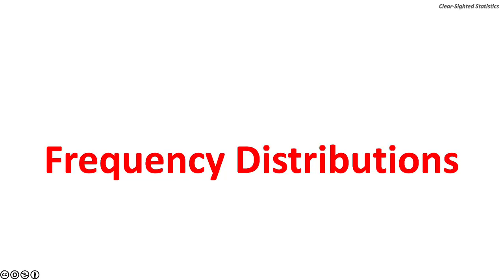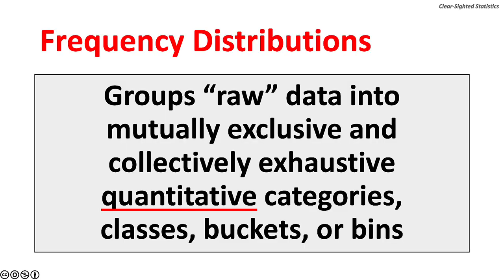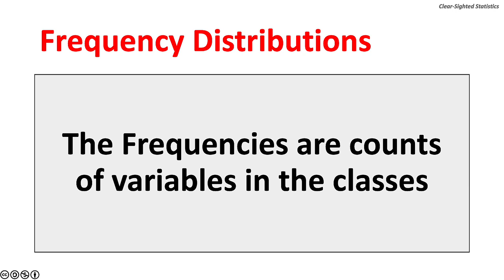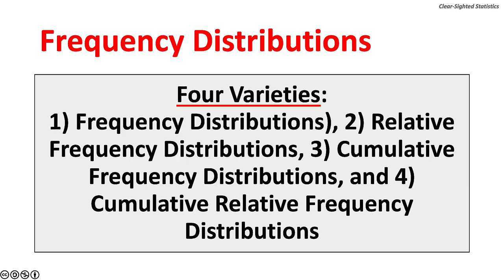Let's turn to frequency distributions. Frequency distributions group raw data into mutually exclusive and collectively exhaustive quantitative categories, classes, buckets, or bins. The frequencies are the counts of variables in each class. There are four varieties: one, frequency distributions; two, relative frequency distributions; three, cumulative frequency distributions; and four, cumulative relative frequency distributions. All four types can be placed on a single table.